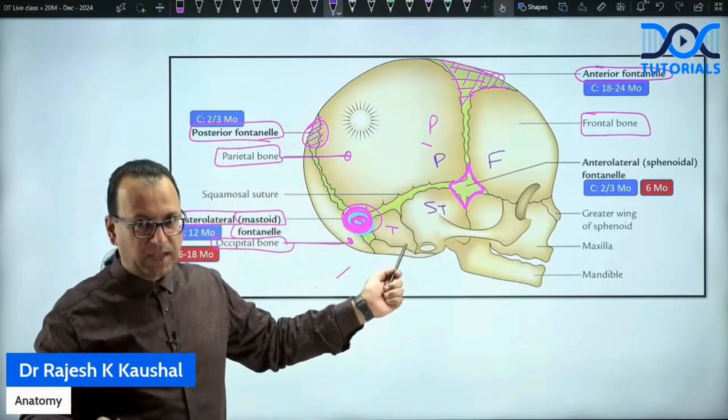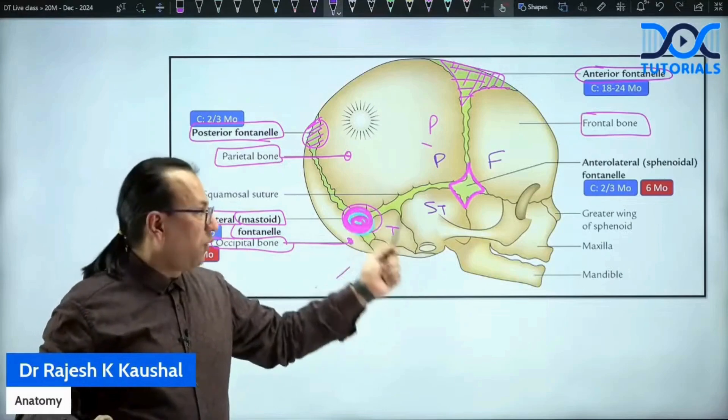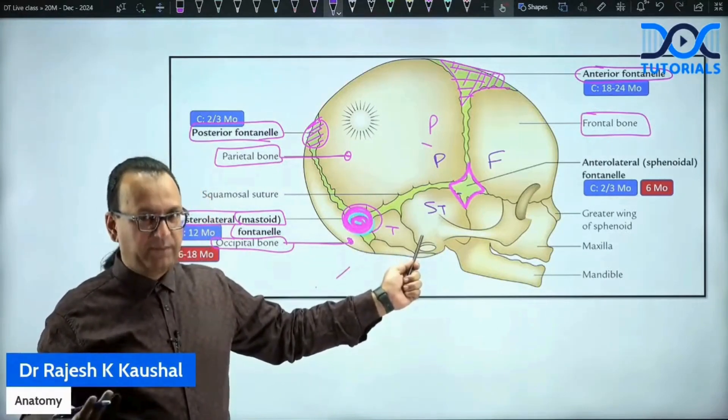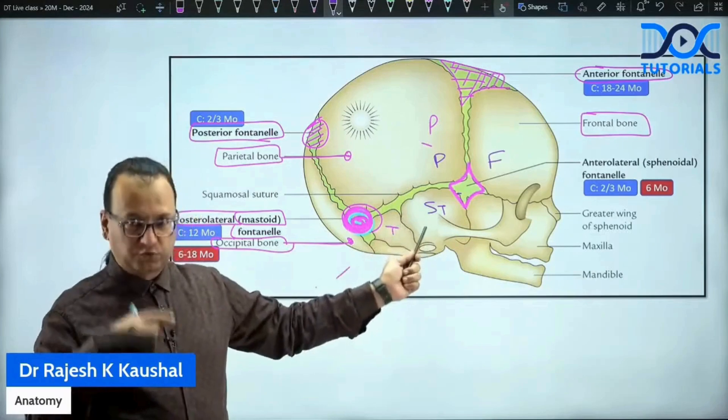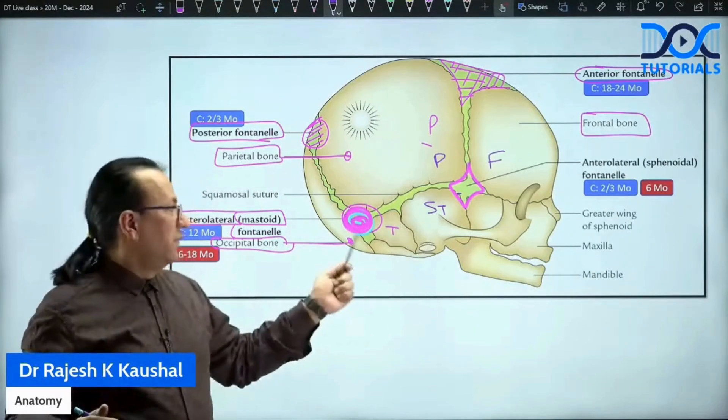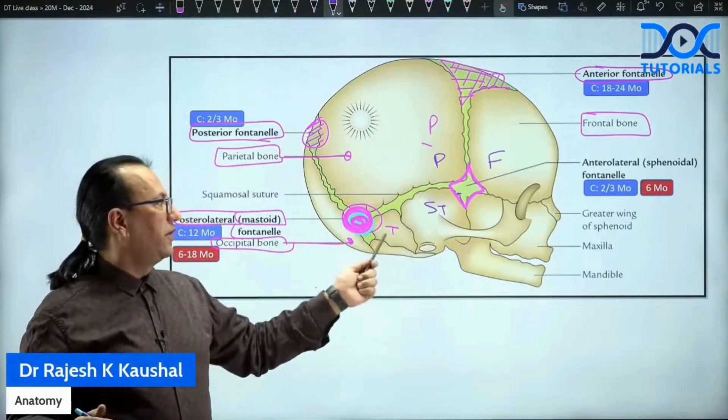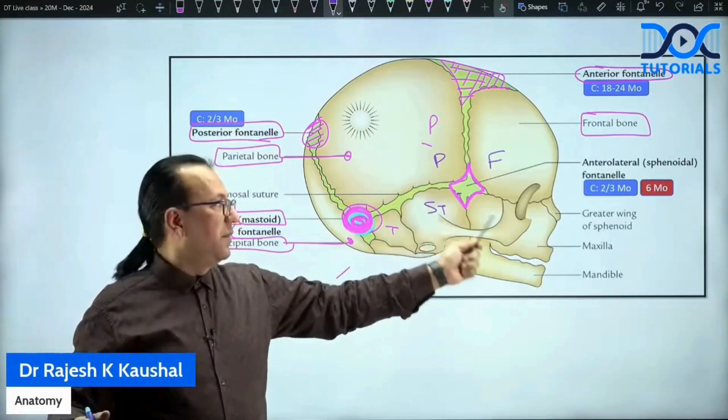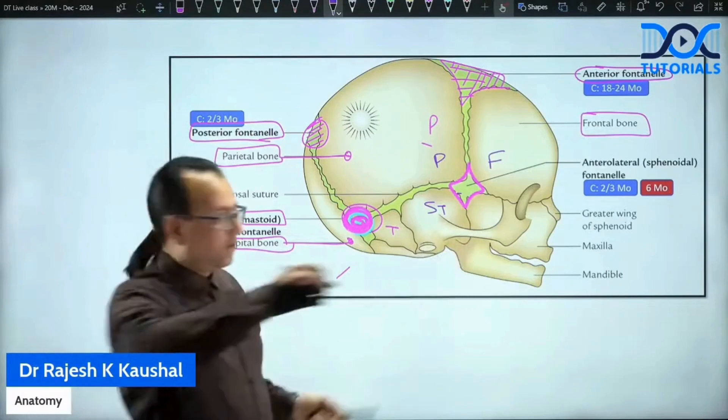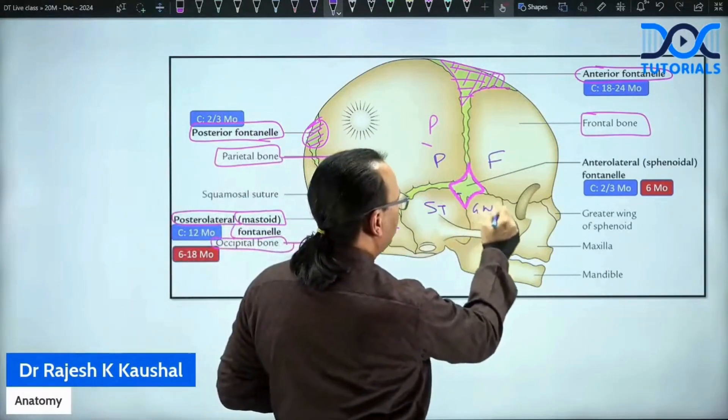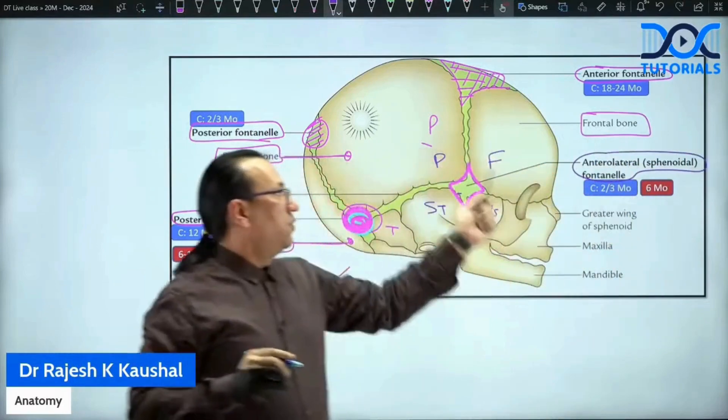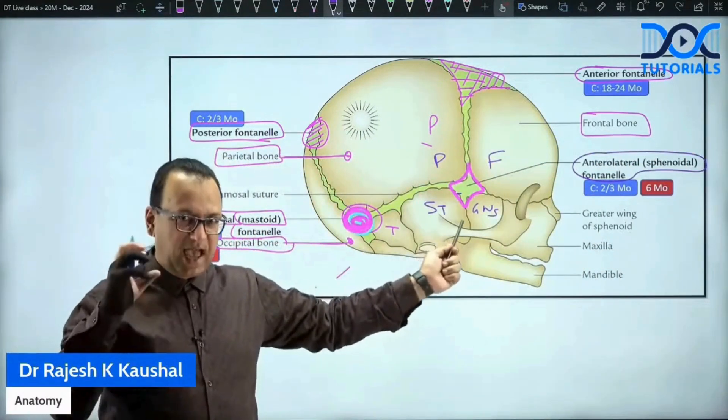Now be careful about these names, squamous part of temporal bone. Earlier, the examiner was asking you temporal, now he may ask you squamous part or mastoid part. Mastoid part is for posterolateral fontanelle, squamous part is for the H-shaped suture, which is later, it will be coming, and then you have greater wing of sphenoid. Because you have greater wing of sphenoid, that is why it is also called sphenoid fontanelle.